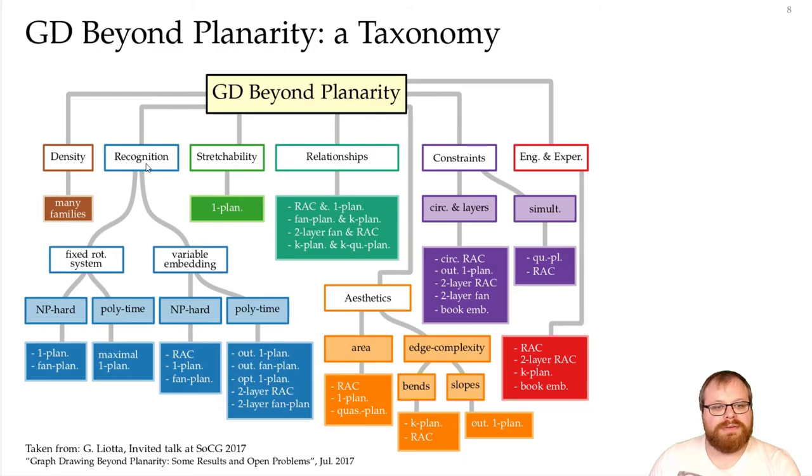How hard is it to recognize if a given graph lies in such a family? And there are differences between the variable embedding, where we are only given the graph, and the fixed rotation system question, where we also know the order of the edges around all vertices and are not allowed to change it. Note that already for one planar graph, the embedding and the rotation system is not exactly the same anymore, while it is for planar.